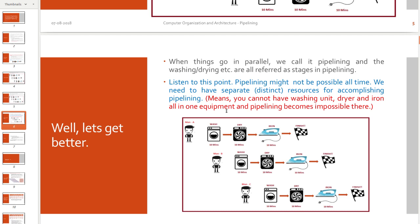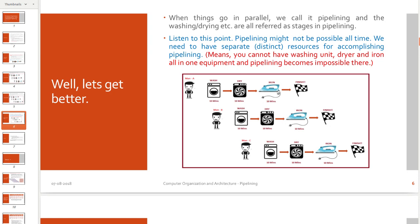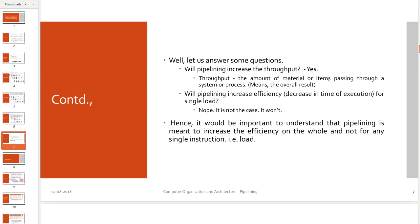What is throughput? Throughput is nothing but the number of work you are doing and number of results that you are giving in a particular amount of time. And most important point, you cannot achieve pipelining if you do not have all these as individual components. I need to have washer separately, dryer separately, iron separately, otherwise it is not going to work. If all of them are in one package, it is not going to work that way.